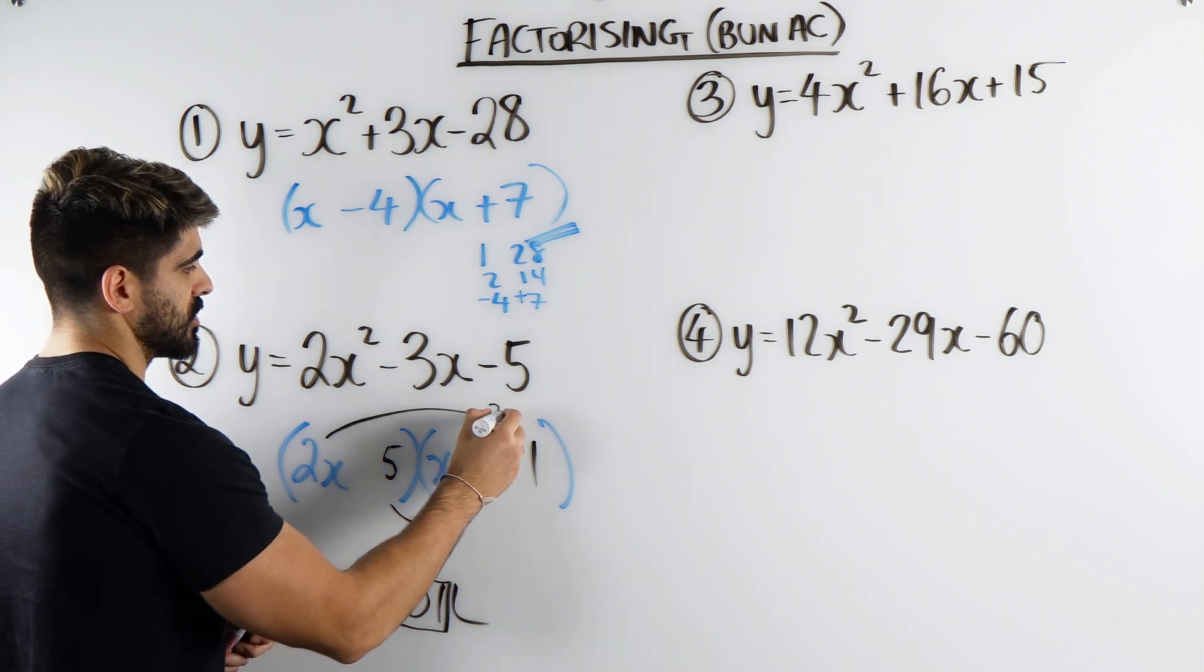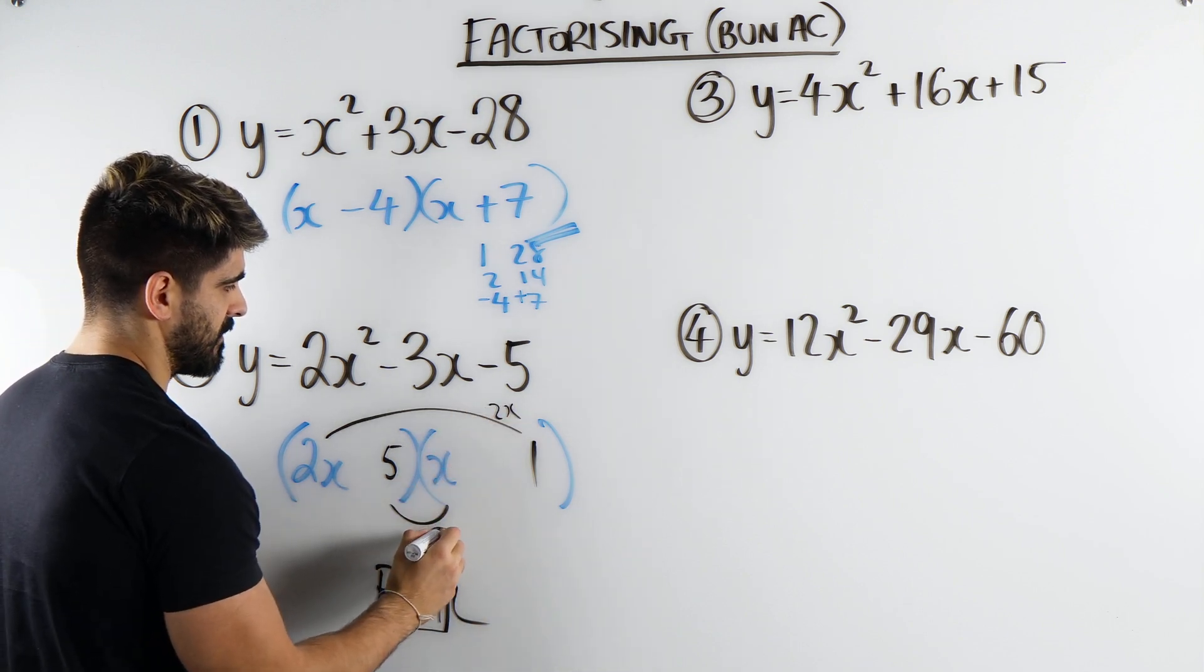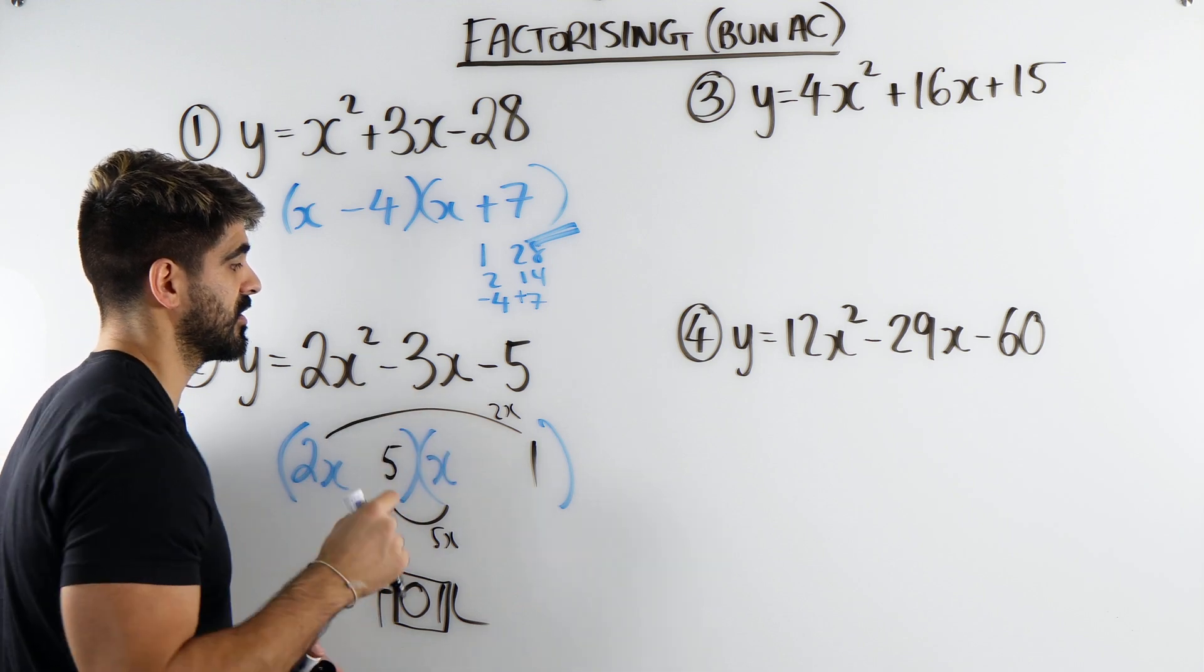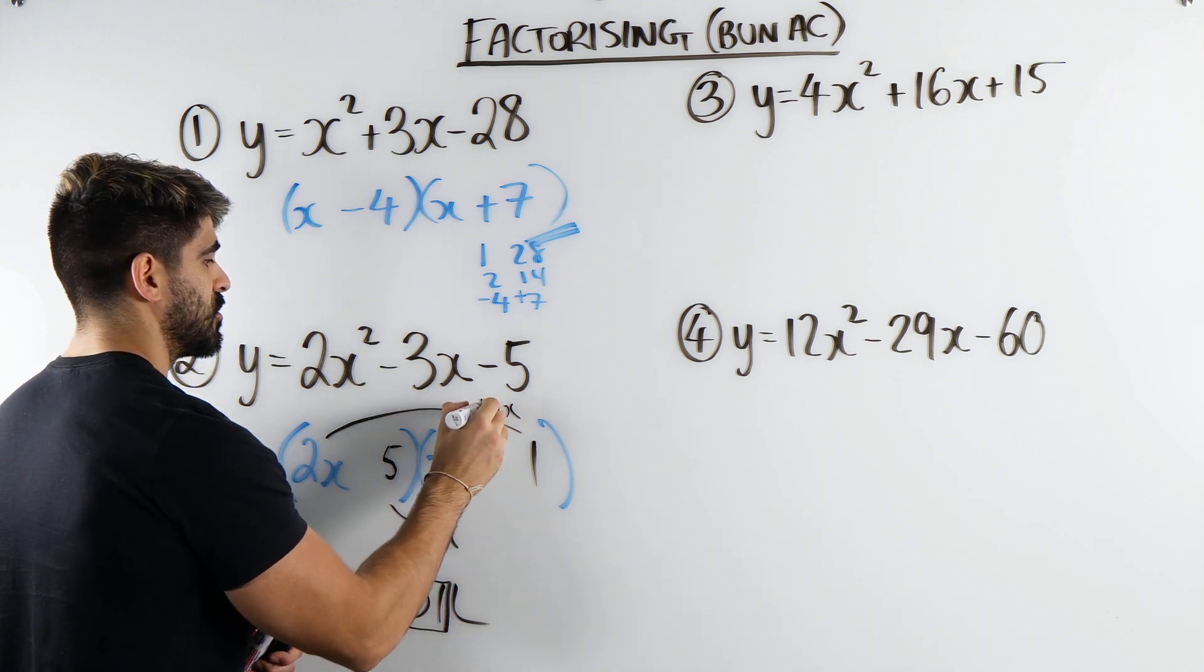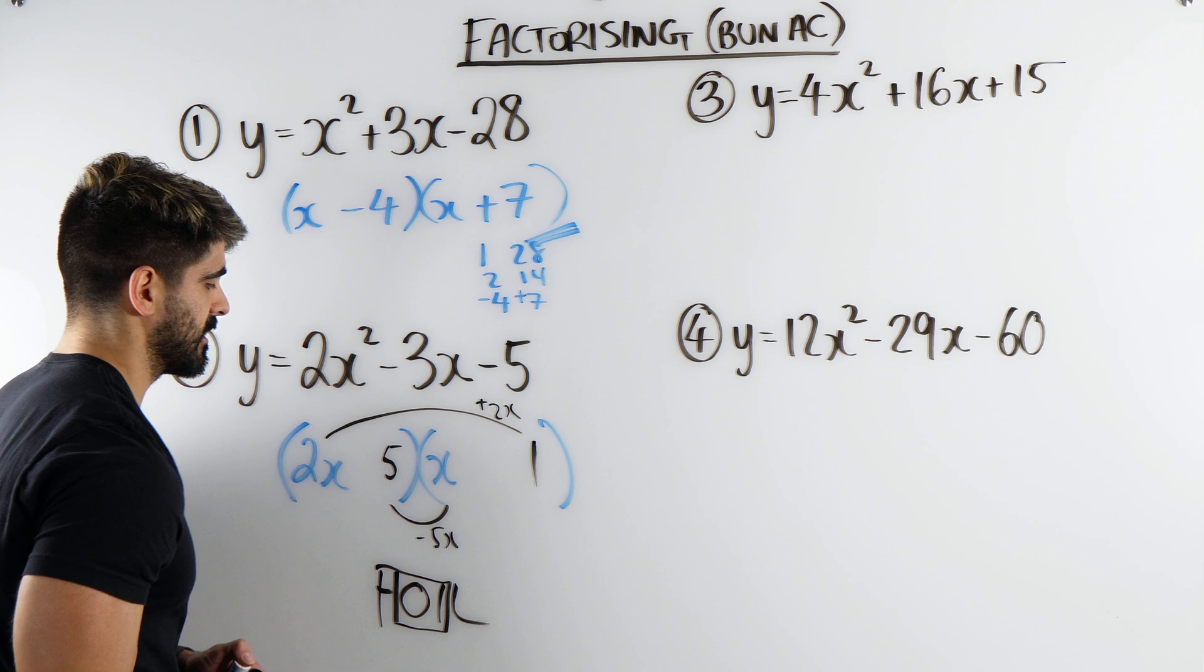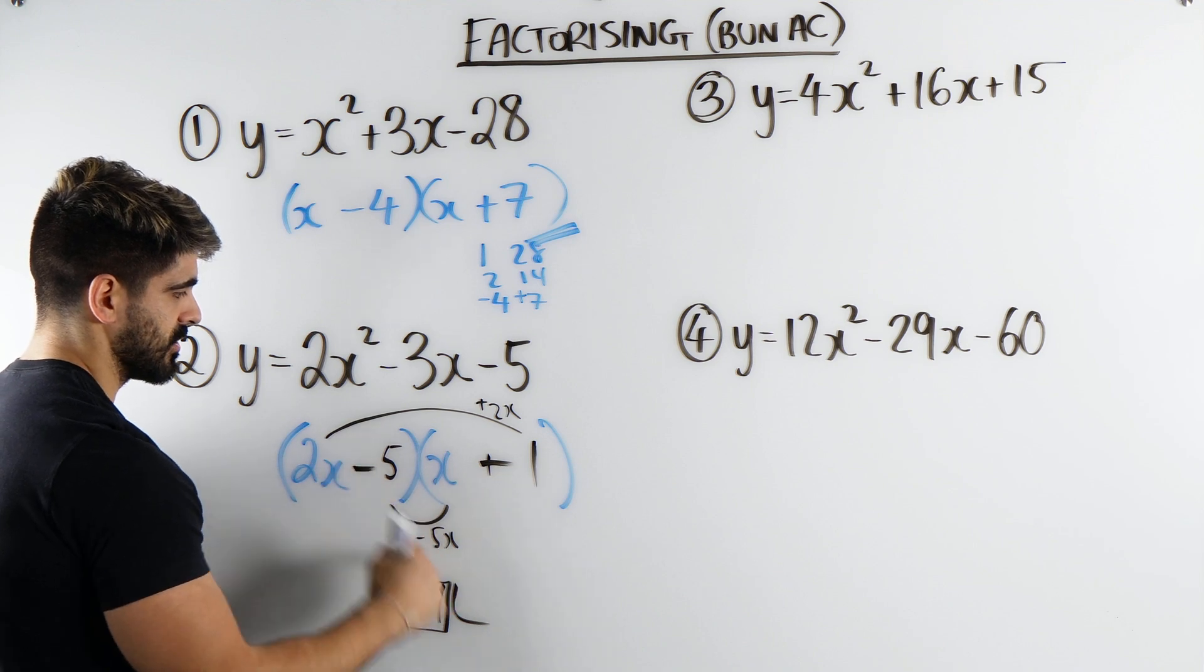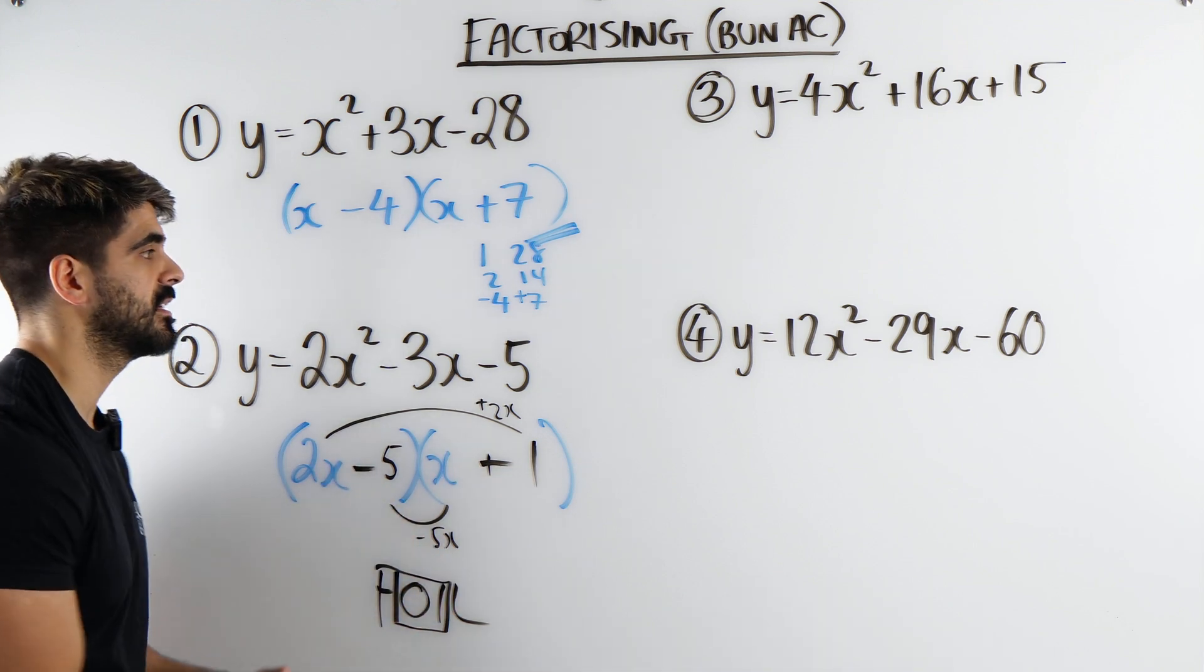Now 2x times 1 is 2x and this gives me 5x. Is it possible for 5x and 2x to make minus 3x? The answer is yes. If you have 2x minus 5x, minus plus, minus. And that's factorized. It's super quick right?